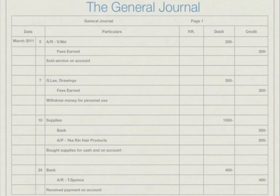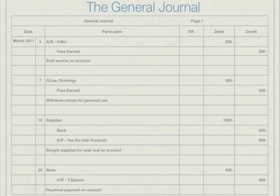These are transactions from the previous slide recorded in a general journal, with an explanation below each. In the first transaction, we debit accounts receivable and credit fees earned because a service was sold on account — we haven't received the money yet. The second transaction debits drawings and credits fees earned because Mr. Lee sold a service but kept the money for personal use. The third transaction debits supplies for hair supplies purchased; the business only paid half, so we debit bank 500 and credit accounts payable 500. Finally, we debit bank 400 and credit accounts receivable 400 as a payment on account from T. Spence, a debtor, reducing the amount he owes.